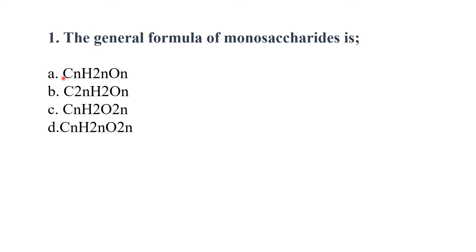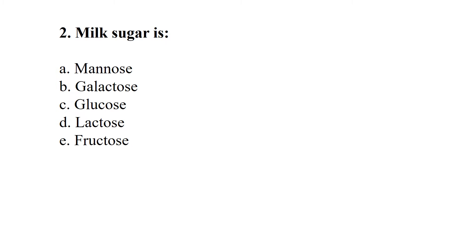MCQ number one: the general formula of monosaccharide is — option A: CnH2nOn, option B: C2nH2On, option C: CnH2O2n, option D: CnH2nO2n. The best answer is option A: CnH2nOn.